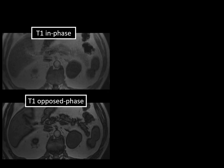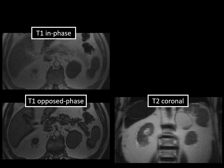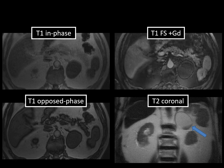Looking at the in-phase and opposed-phase T1-weighted images from the patient's MRI, this left adrenal mass does not lose signal on the opposed-phase image — it does not drop out. Therefore it's not consistent with a lipid-rich adrenal adenoma. On the T2 coronal series, the mass is extremely bright, similar to water, iso-intense to adjacent fat. There's also a small amount of layering T2 hypointense debris within this structure. On the T1 fat-suppressed post-contrast series with gadolinium, the mass is completely non-enhancing and dark on T1, consistent with fluid. This is typical for an adrenal cyst.